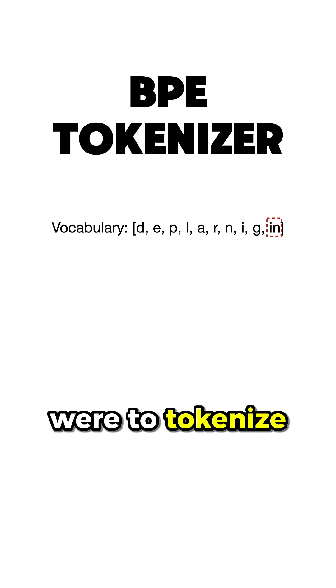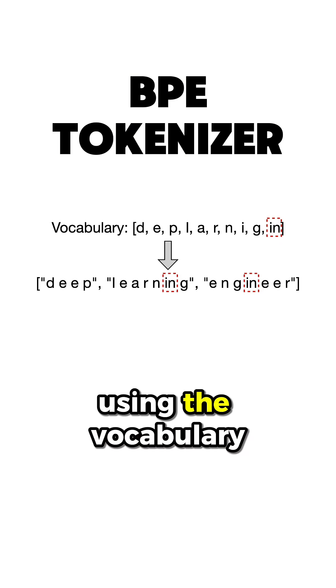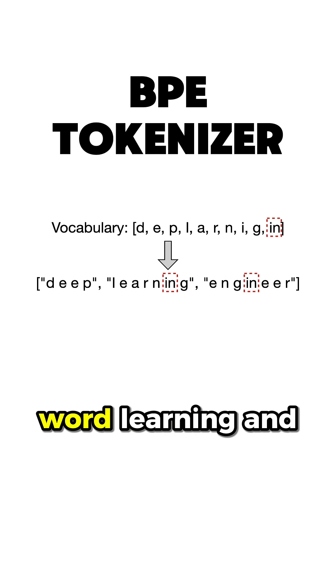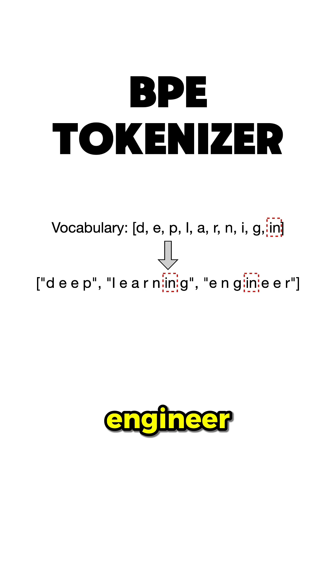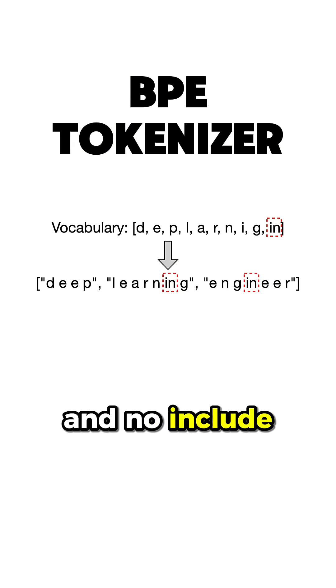Now, if we were to tokenize the sentence again using the vocabulary, we would obtain the following. We can see that both the word Learning and Engineer are tokenized differently and now include the IN pair of characters.